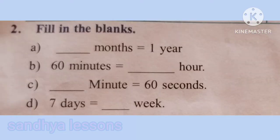Second question: fill in the blanks. A: 12 months equals 1 year. B: 60 minutes equals 1 hour. C: 1 minute equals 60 seconds. D: 7 days equals 1 week.